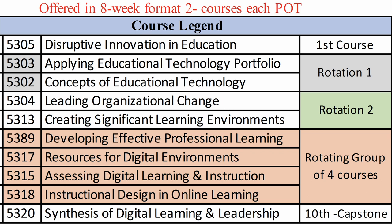These alternating courses fall into the following rotations. The first rotation includes 5303 and 5302. The second rotation is 5304 and 5315. The rotating group includes 5319, 5317, 5315, and 5318. EDLD 5305 runs every term and is combined with one of the first two courses in the first rotation. EDLD 5320, or the capstone course, runs every term as well and is combined with one of the four courses in the rotation group. We want you to be successful in the program, so don't hesitate to reach out to us if you have any questions.